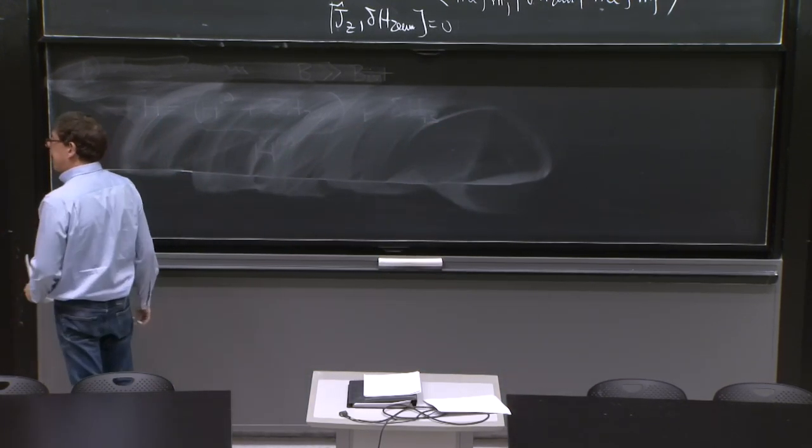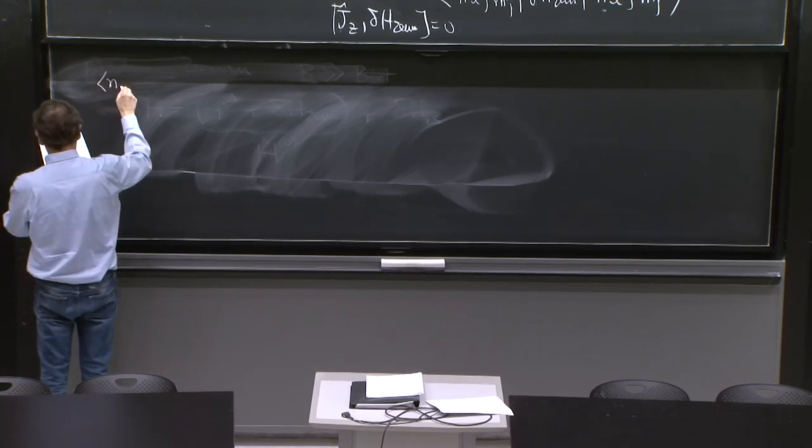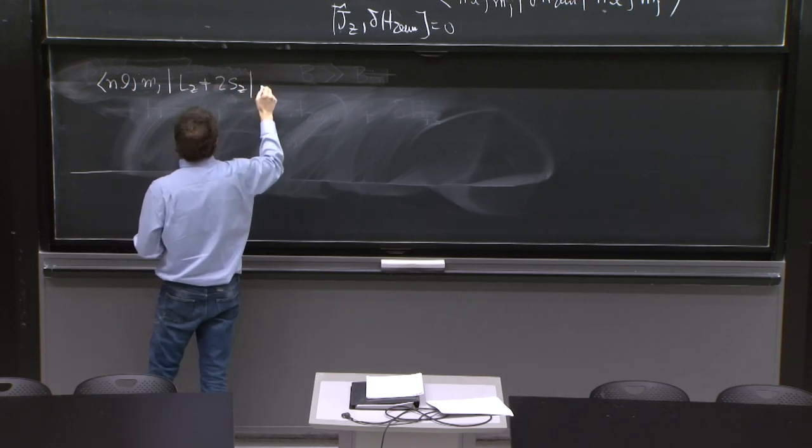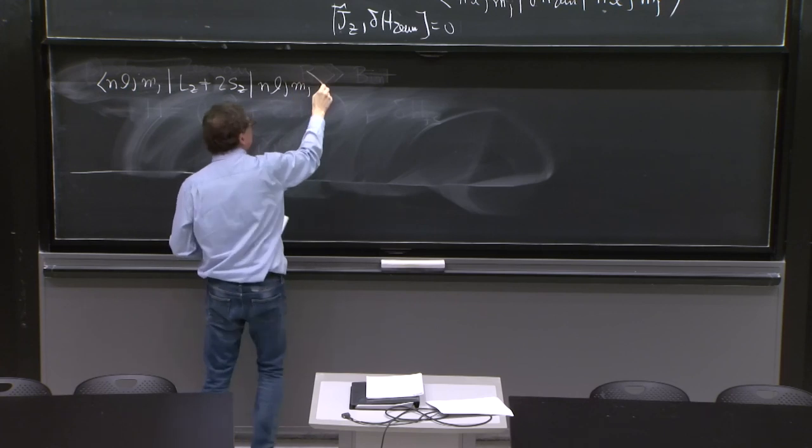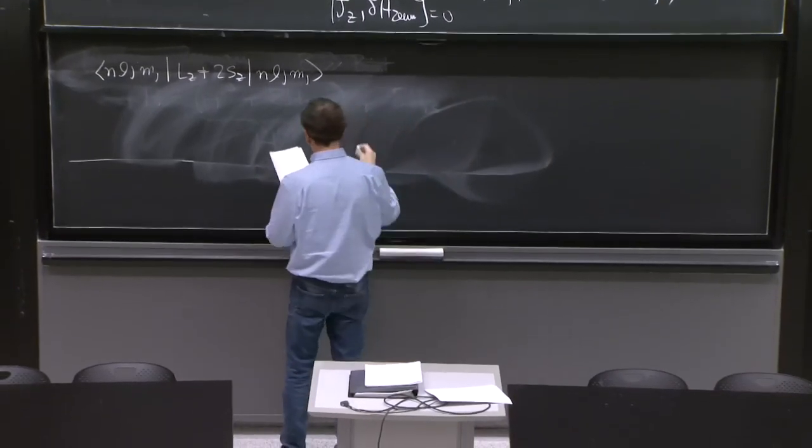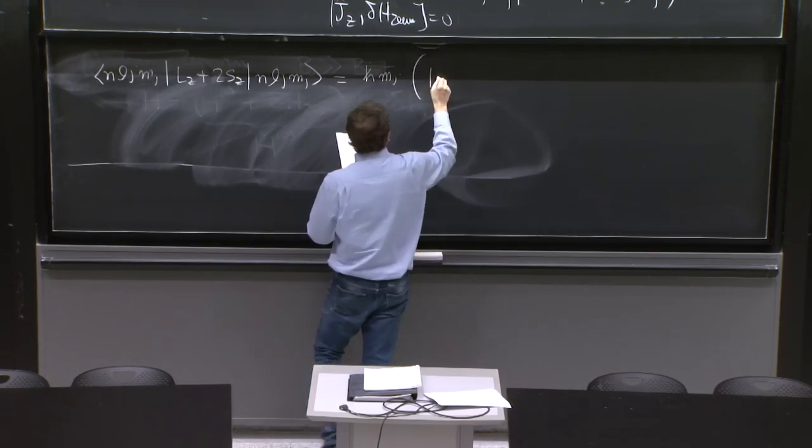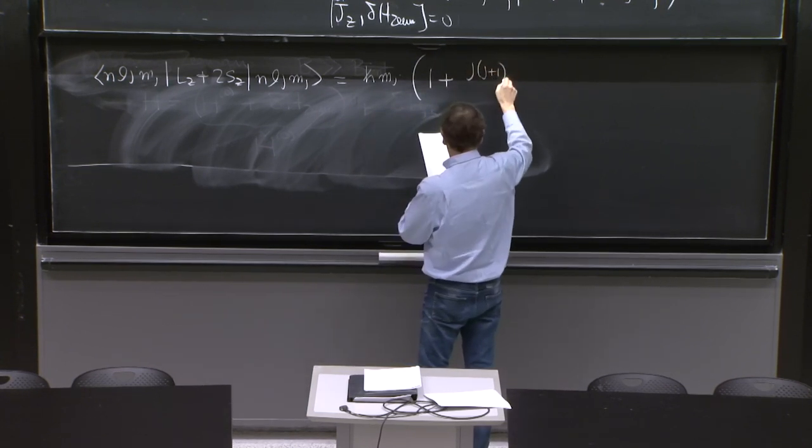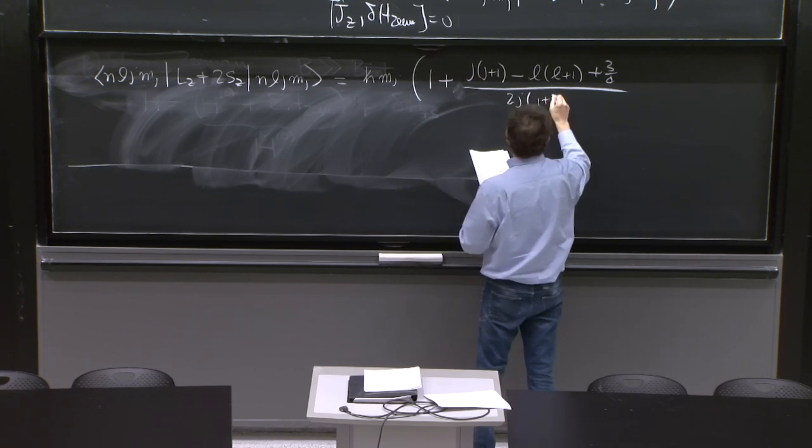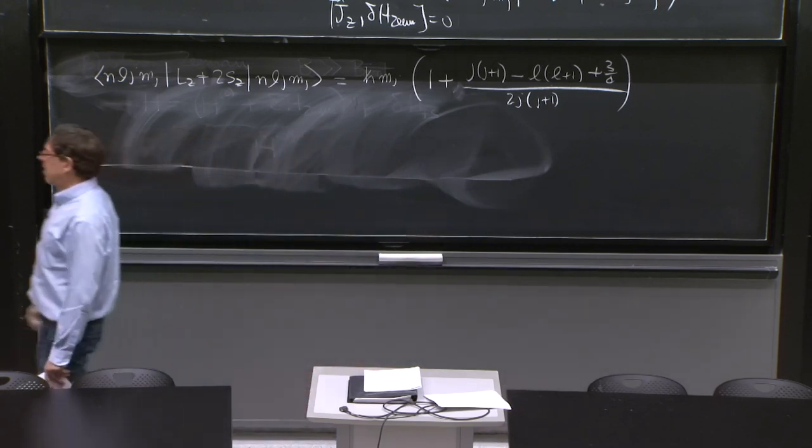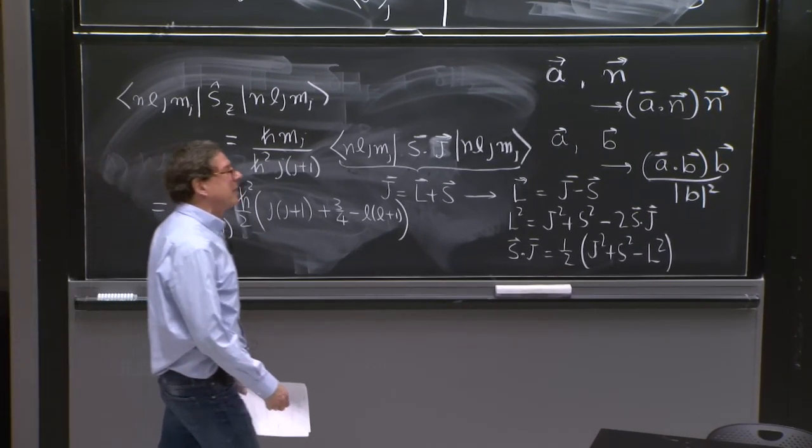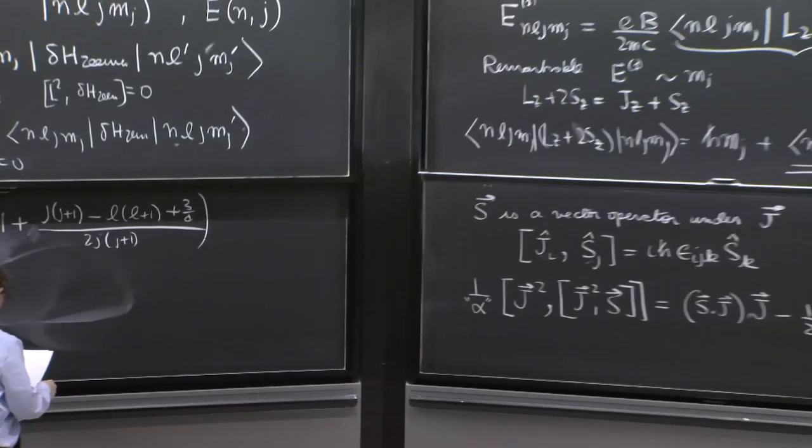So what is the result? Well, the matrix element, n, l j, mj, lz, I'll put the whole thing together. lz plus 2 sz back to the whole matrix element. Remember, we had one piece, h mj, and now this part. So adding the h mj to this new part, we have h mj 1 plus j times j plus 1 minus l times l plus 1, plus 3 quarters over 2 j times j plus 1. I just copied that term, hopefully without mistakes. So we have our matrix element. And that matrix element in the top blackboard there gives us the splitting.